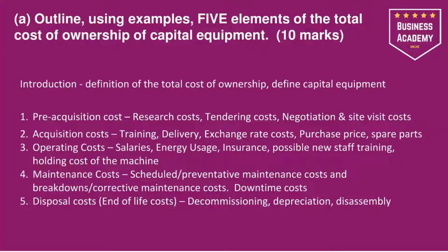Then we have acquisition costs — basically the cost of acquiring or purchasing that item. These include things like training, delivery, exchange rate costs, the purchase price itself, and spare parts. A lot of students get confused with spare parts being in acquisition and not operating. Spare parts can be in both, but when purchasing a good we always want to work on a Kanban system — a two-bin system — where we buy extra spare parts up front so we've always got one bin in hand.